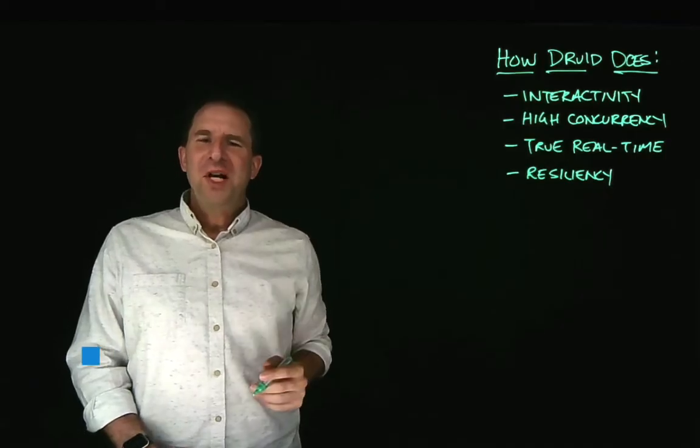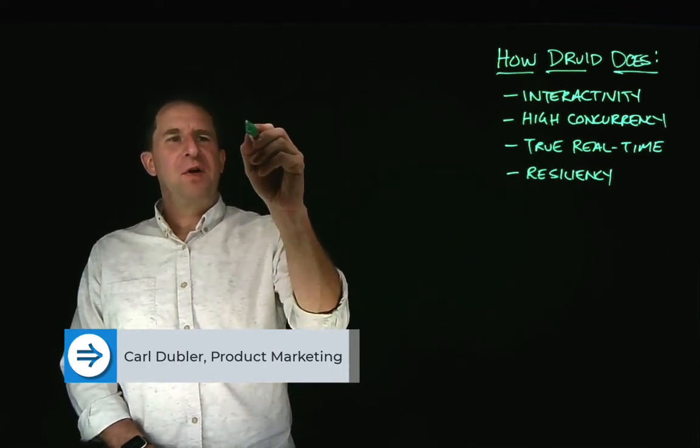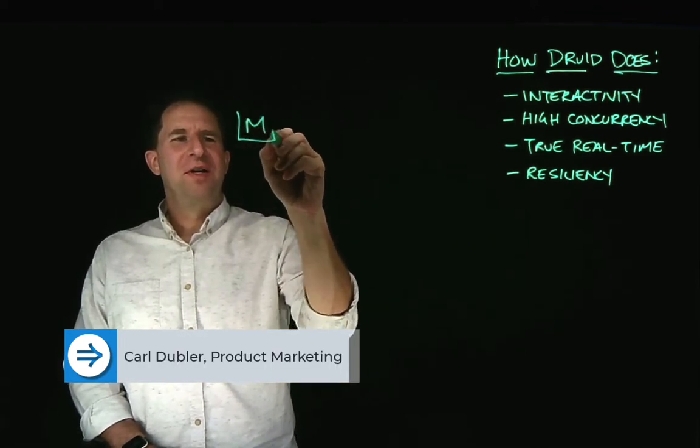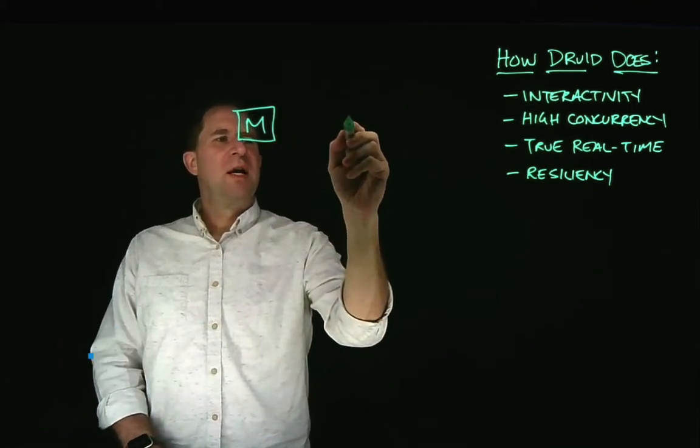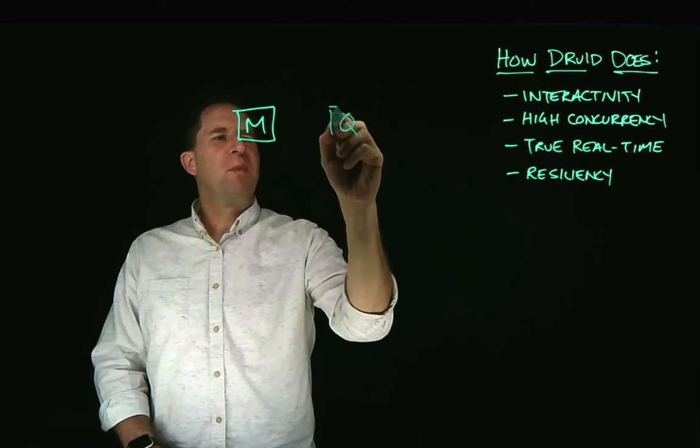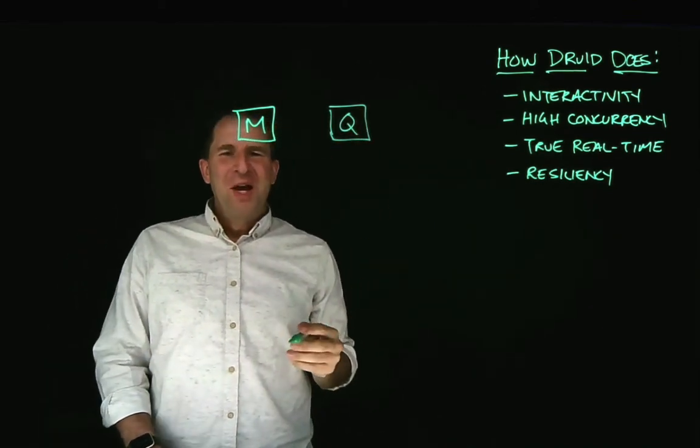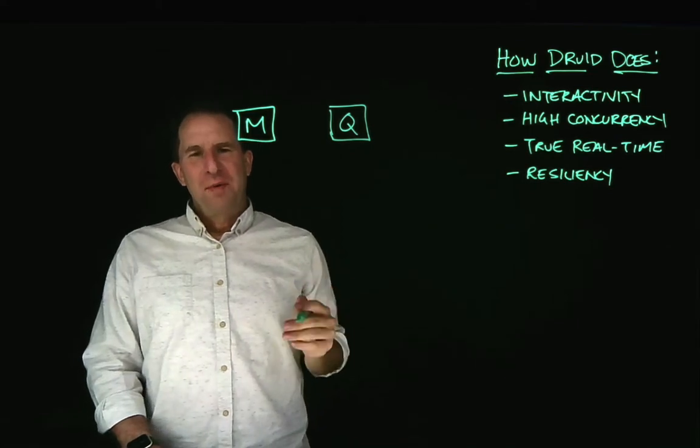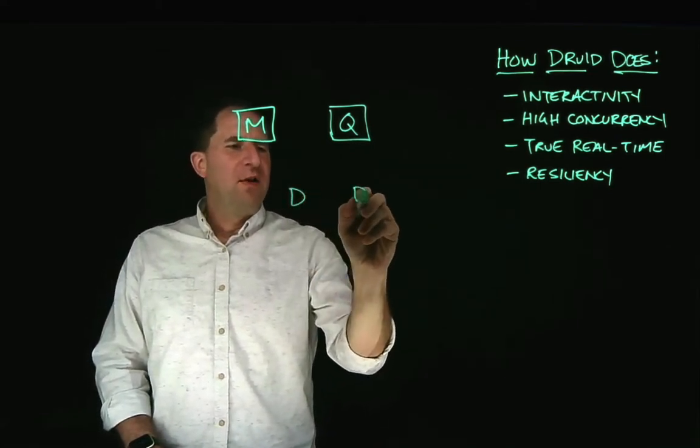When you set up a Druid cluster, there are three basic node types that you need to take care of. First is the master node, which is responsible for the overall health of the Druid cluster. There are query nodes, which are responsible for parsing and delivering query results. And then the data is going to be stored on data nodes. In this example, I'm going to draw three data nodes.